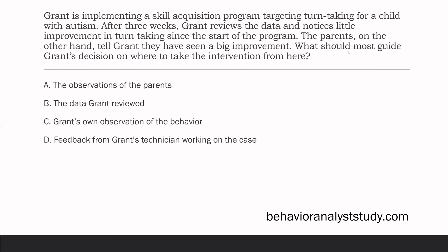Grant is implementing a skill acquisition program targeting turn-taking for a child with autism. After three weeks, Grant reviews the data and notices little improvement in turn-taking since the start of the program. The parents, on the other hand, tell Grant they have seen a big improvement. What should most guide Grant's decision on where to take the intervention from here? There are a lot of different ideas in our task list about collaboration, how we make decisions, and data-driven results.